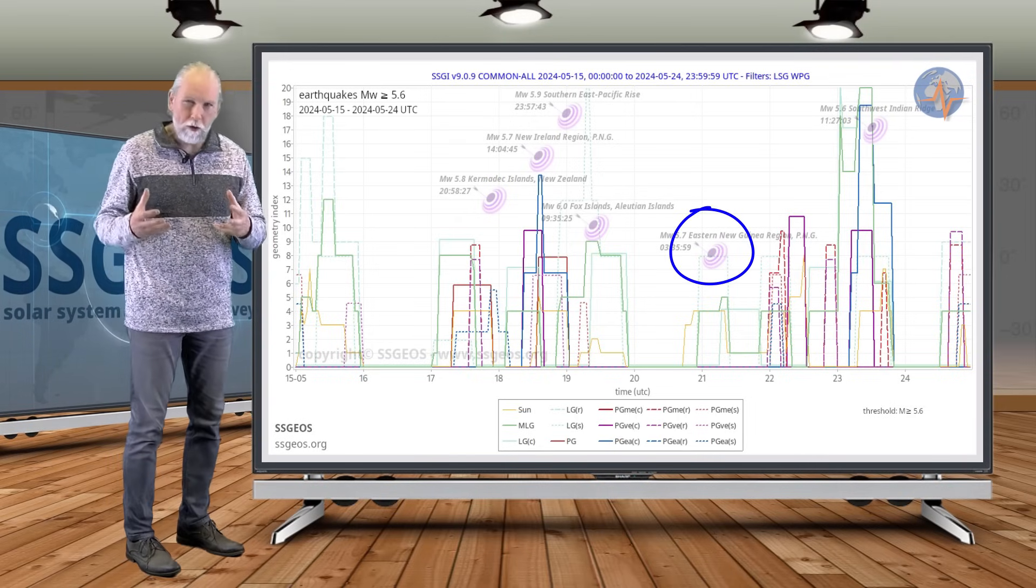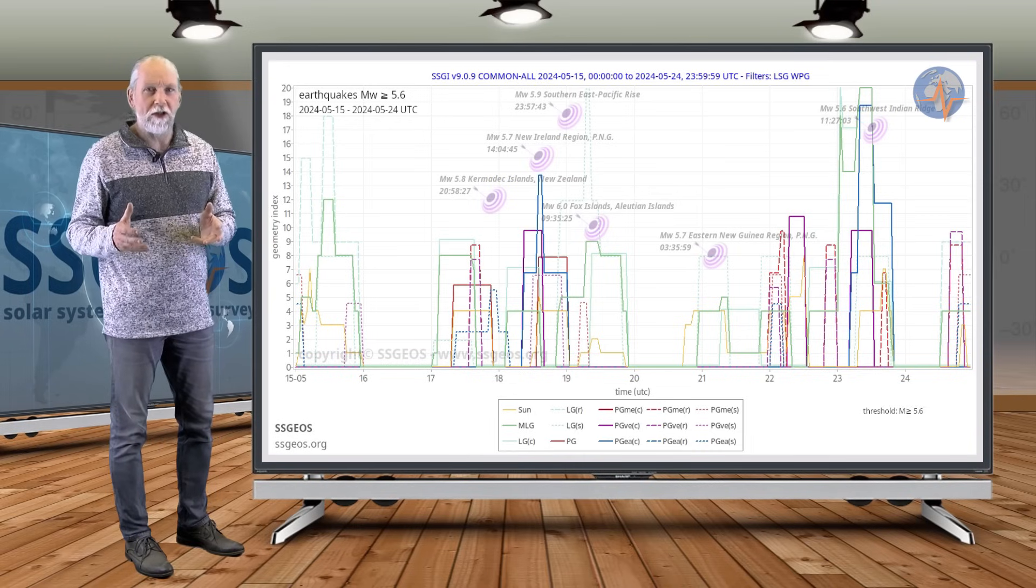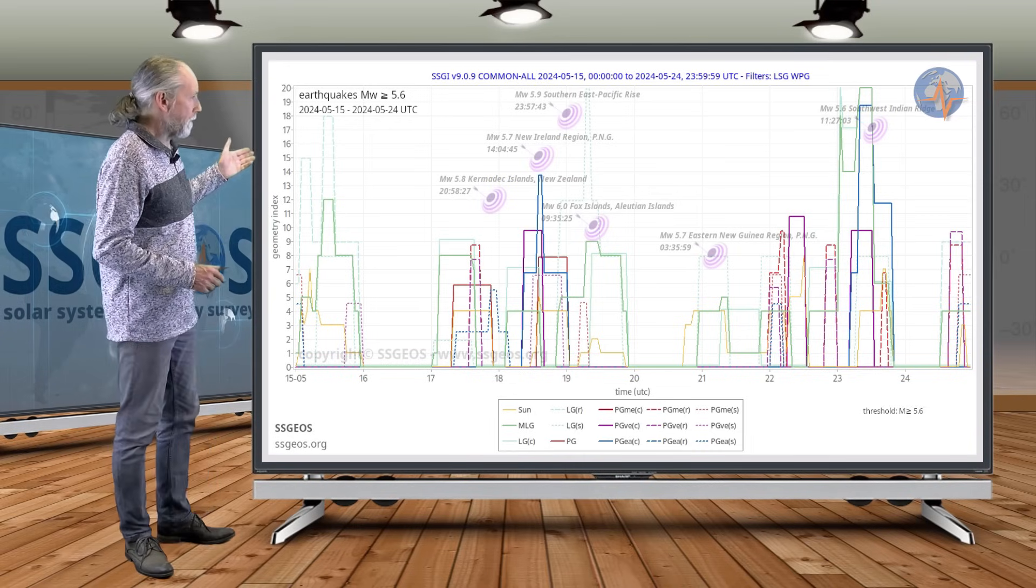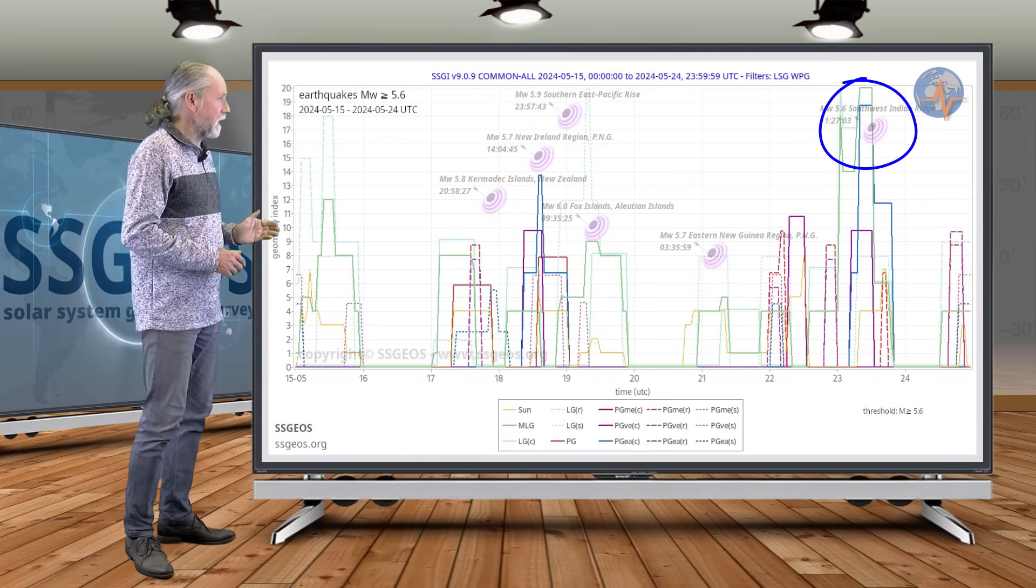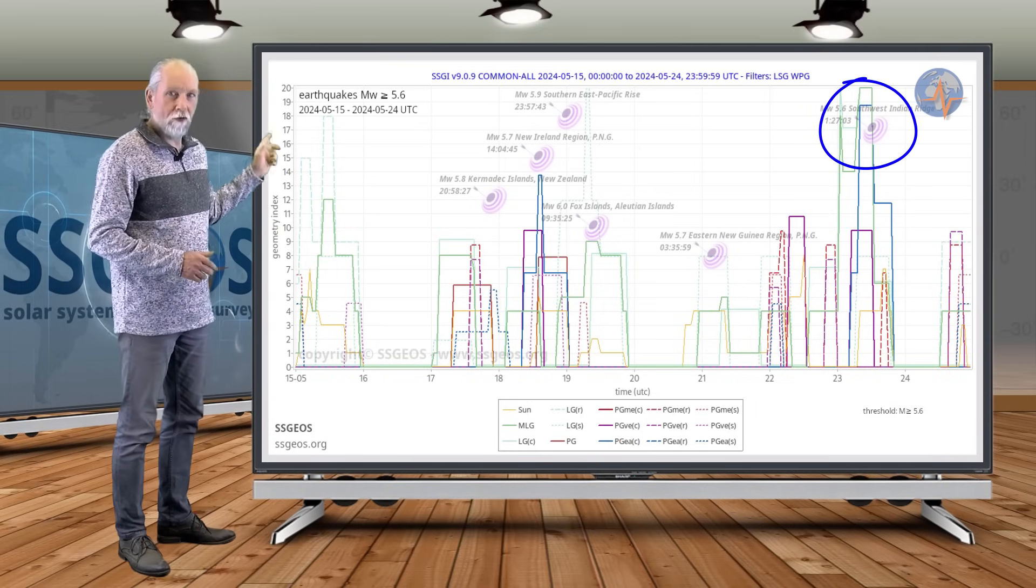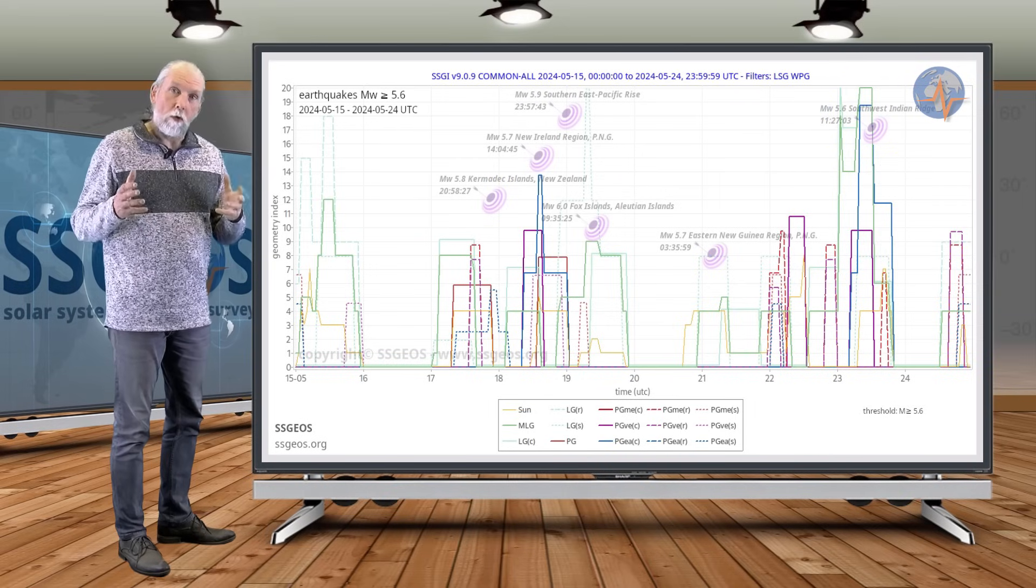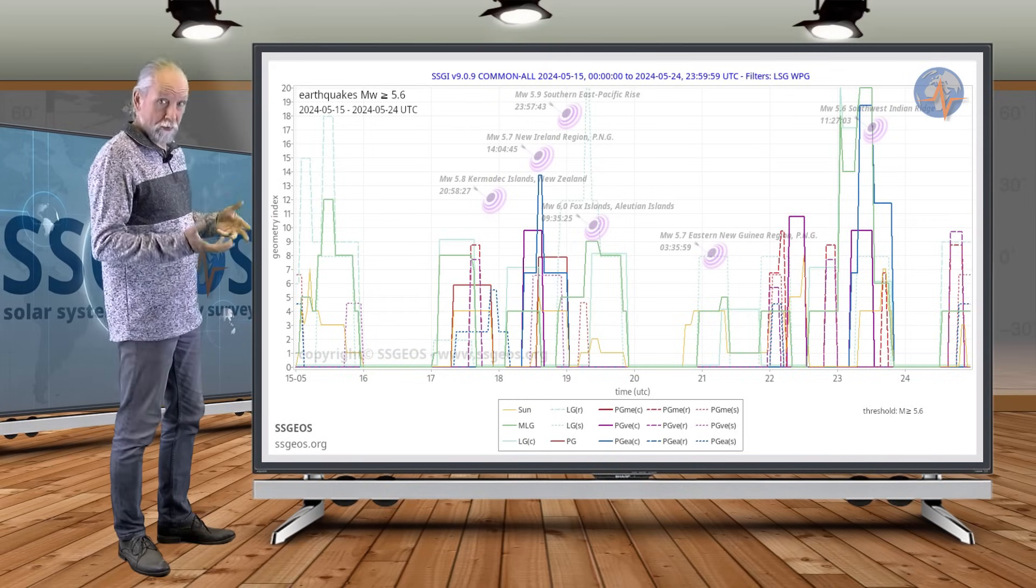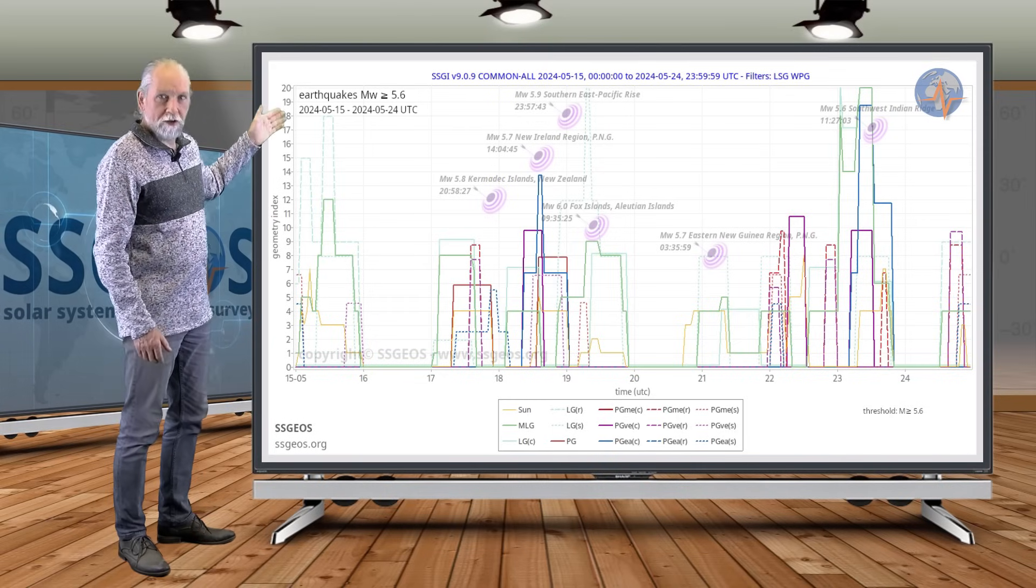And then the more critical planetary geometry on the 22nd, 23rd actually didn't result in an obvious clustering. We had a single 5.6 at Southwest Indian Ridge, which by the way coincided with the atmospheric fluctuation that I discussed in the previous update that marked the site